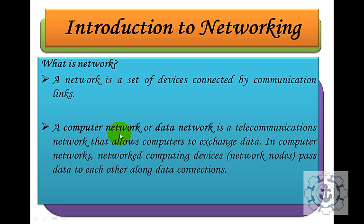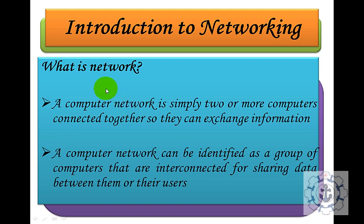The main core of networking is that computers can communicate and exchange information between each other. In computer networks, network computing devices — that is network nodes — pass data to each other along the data connection. Whenever you want to forward information from one node to another, the data can pass through intermediate network nodes which forward the message to the destination node.